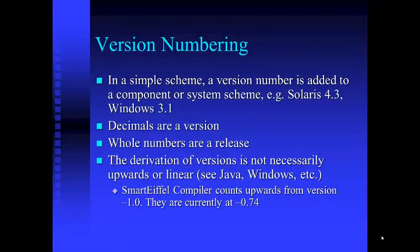Version numbering: in a simple scheme, a version number is added to a component or system. For example, Solaris 4.3, Windows 3.1 — decimals are versions, whole numbers are a release. Derivation in versions is not necessarily upwards or linear: Windows 1.0, 2.0, 3.0, 3.1, 95, 98, ME, XP, Vista, 7, 8. SmartEiffel took this to another level, starting from version minus 1.0 and counting upwards — they're currently at version minus 0.74.